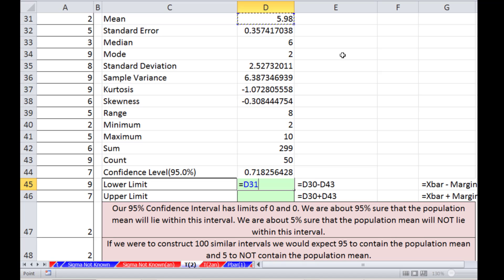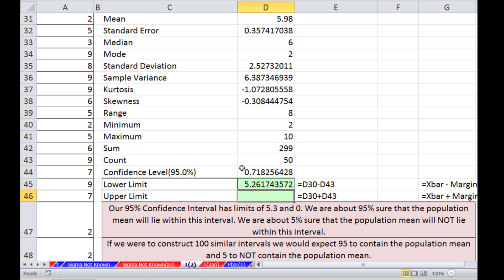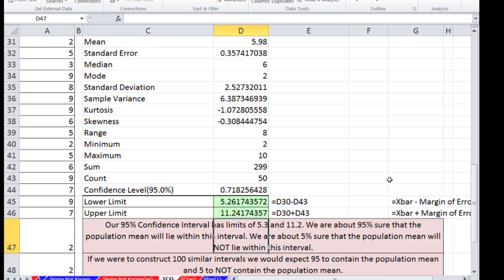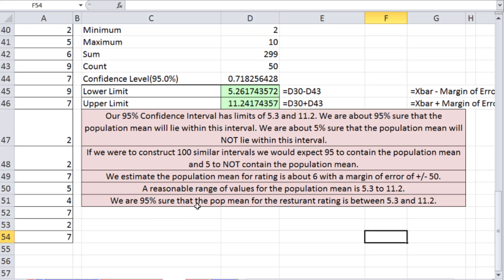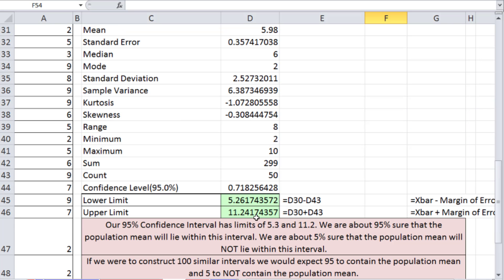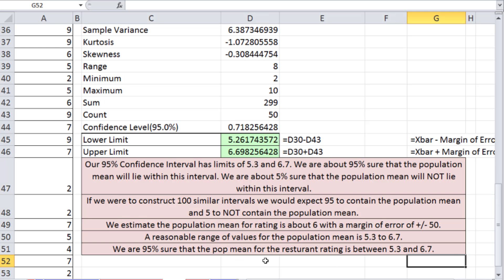There's our mean from our descriptive statistics minus the margin of error. Notice it doesn't say margin of error. It just says confidence interval. But that is the margin of error. And so now we are 95% sure that the population mean for restaurant rating is between 5.3 and 6.7.